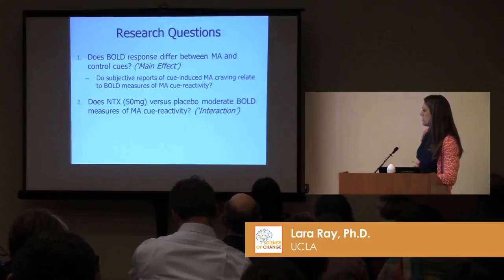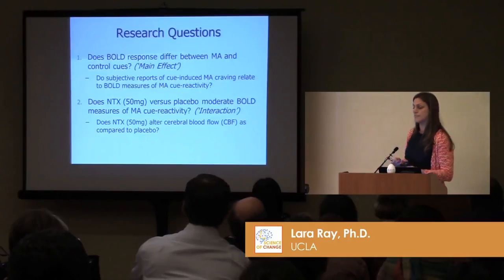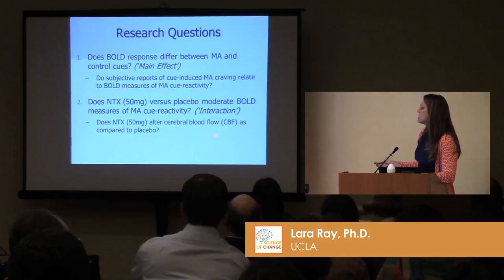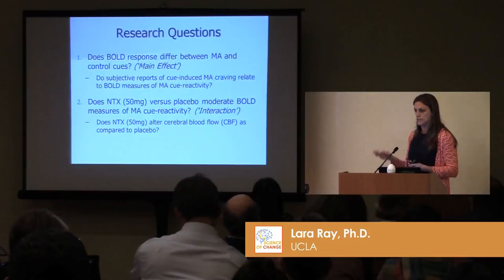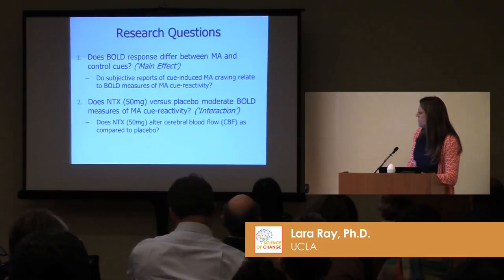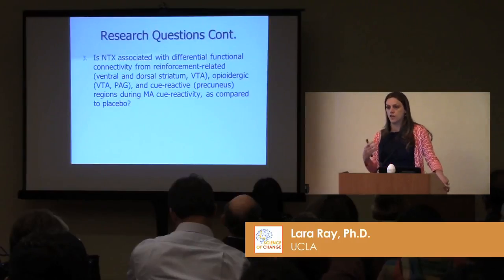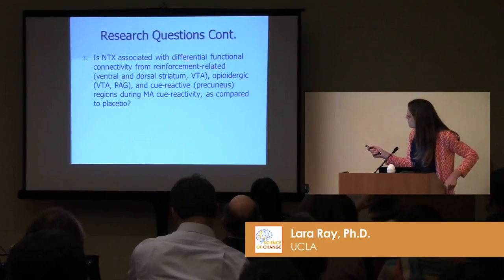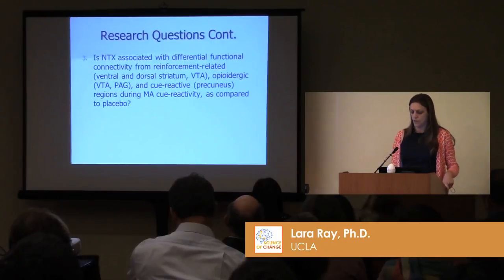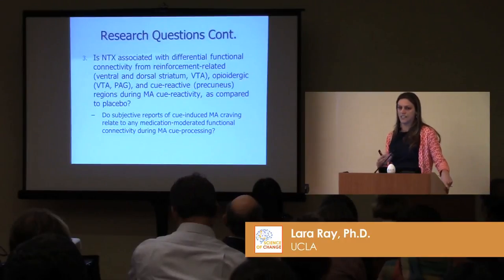After we look at the validity of our task, we want to look at naltrexone effects. But before we can do that, one thing that gets talked about a lot but very seldom implemented is ruling out the effects of the medication on cerebral blood flow. There's a special step for doing so — an ASL sequence — and I'll be showing that today. More mechanistically, we want to set seed regions and look at how naltrexone may alter functional connectivity from those seed regions, focusing on reinforcement-related, opioidergic, and cue-reactive regions. And again, we'll go back to self-reported craving as a way to interpret these connectivity findings.